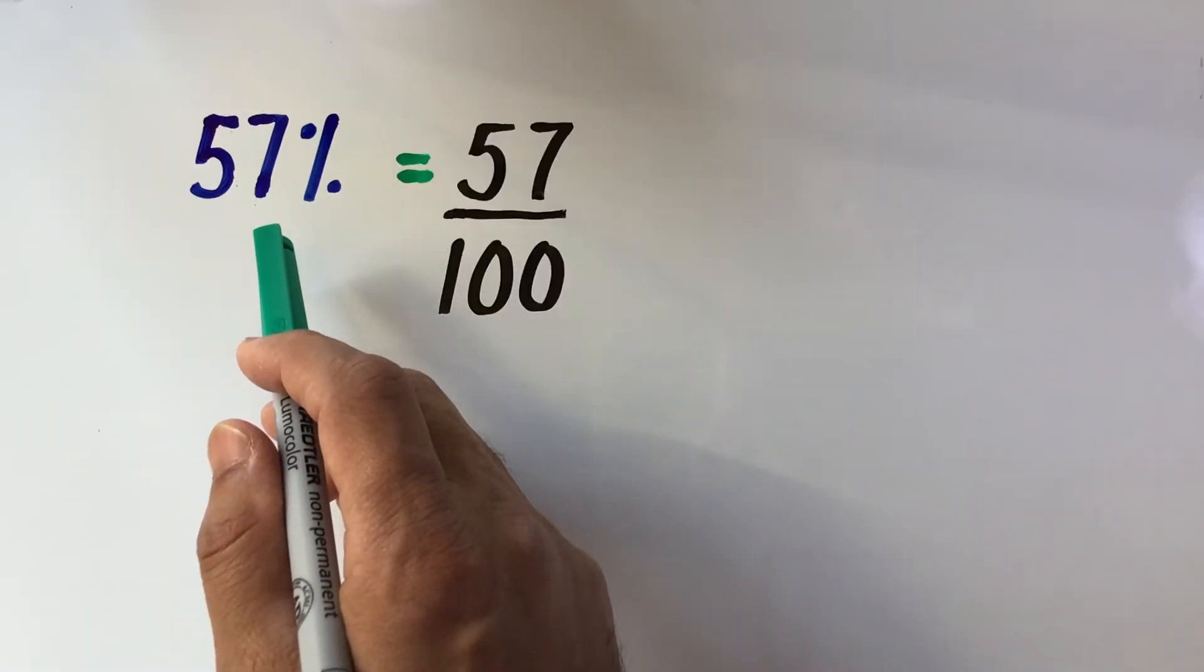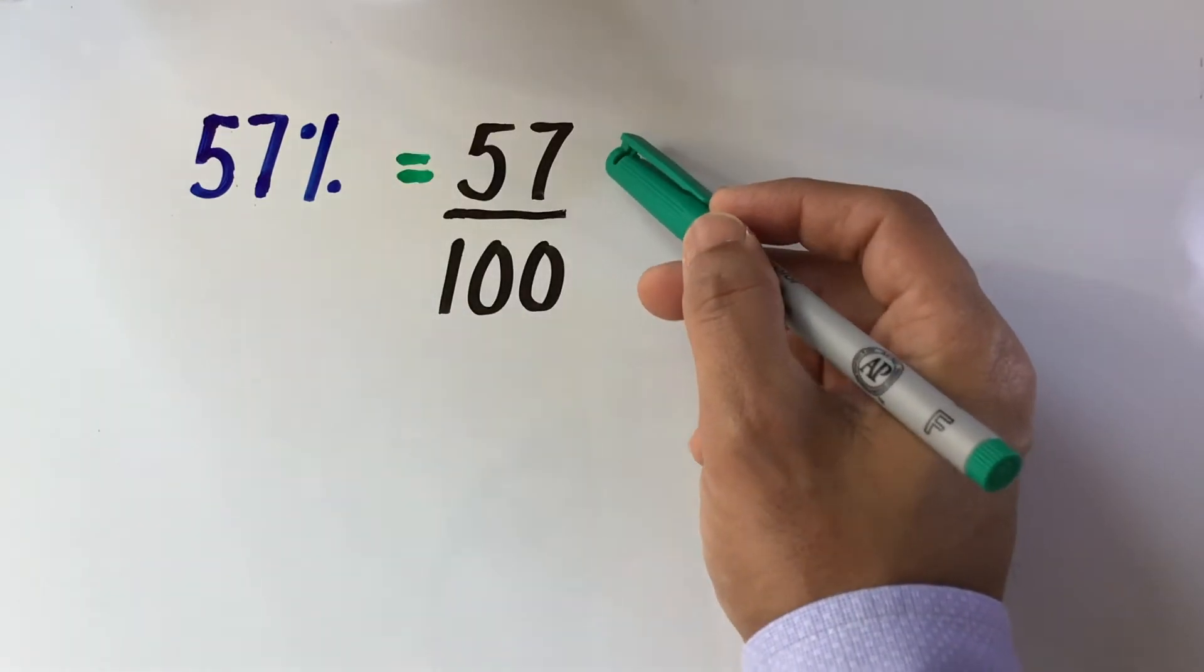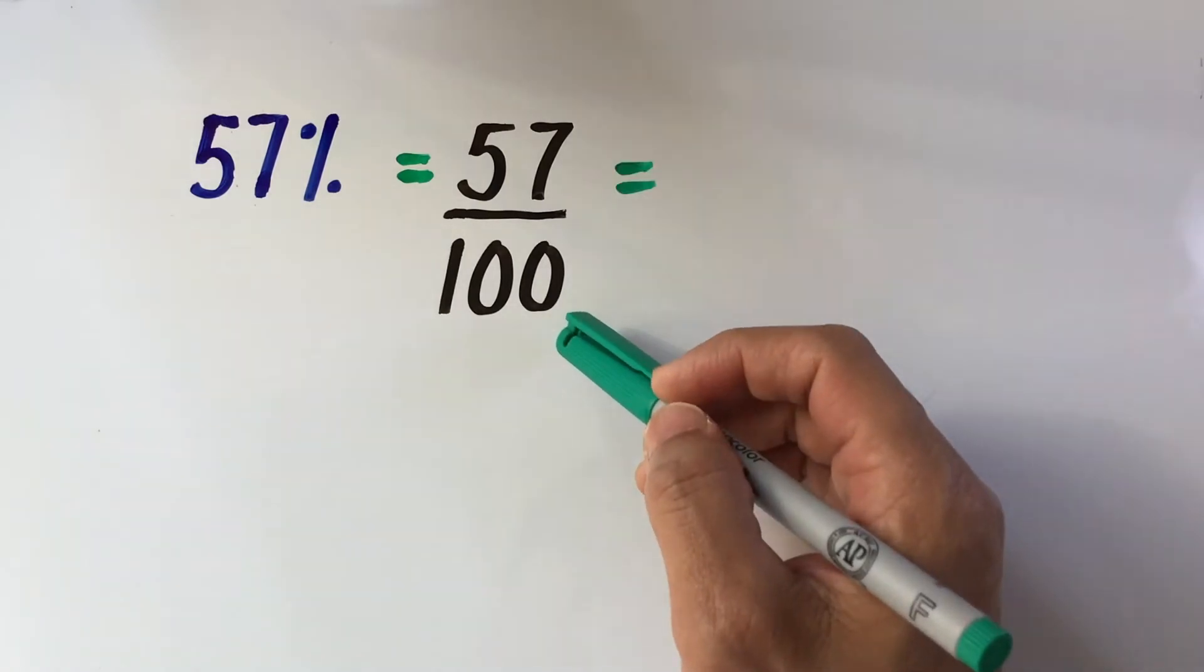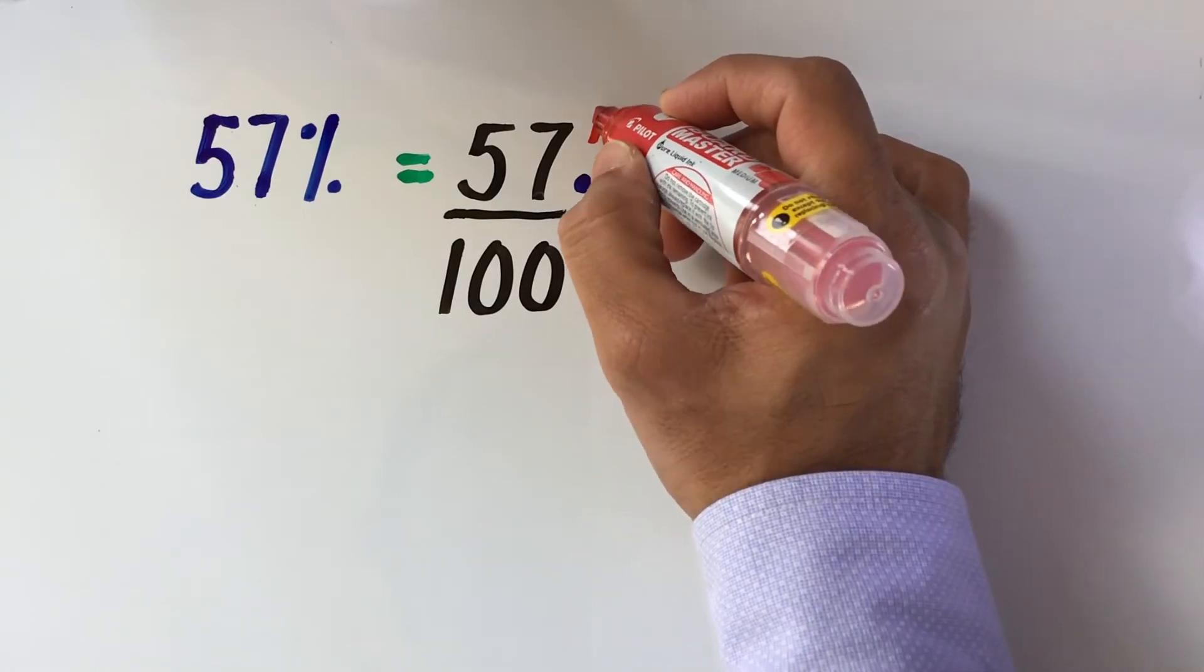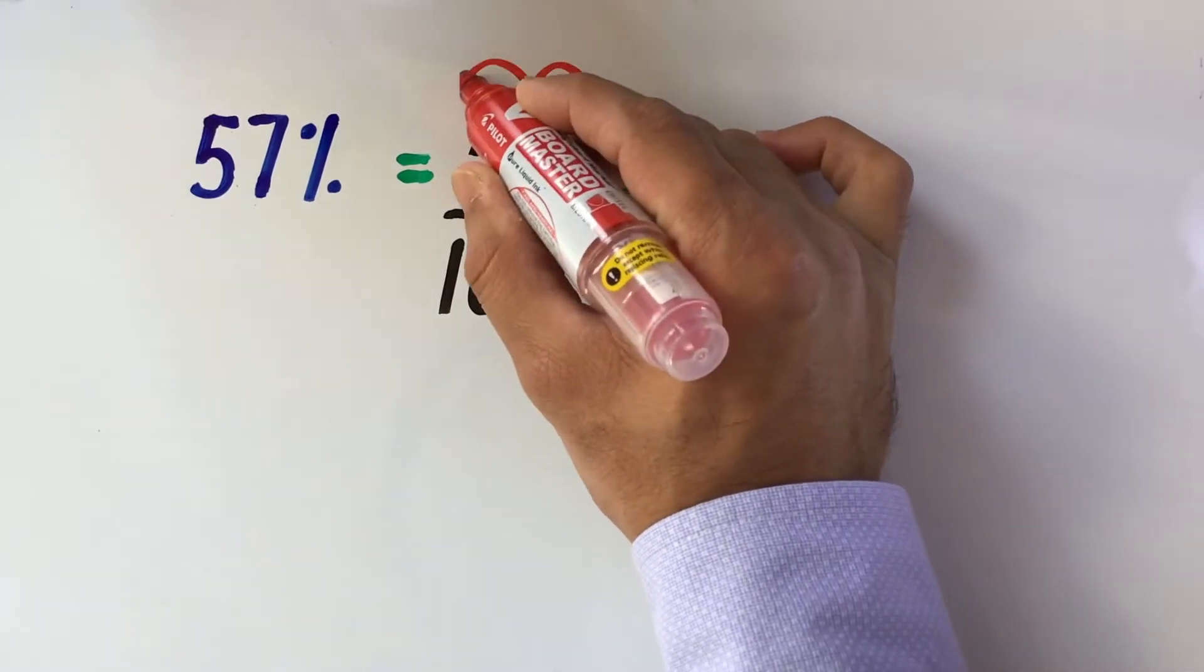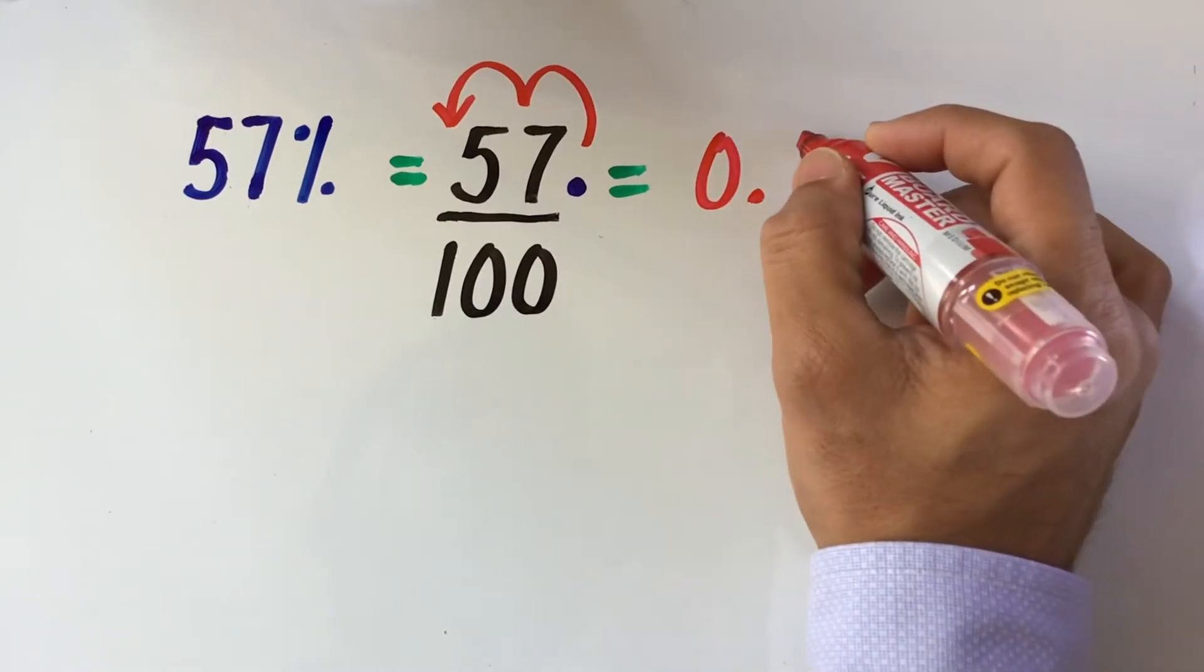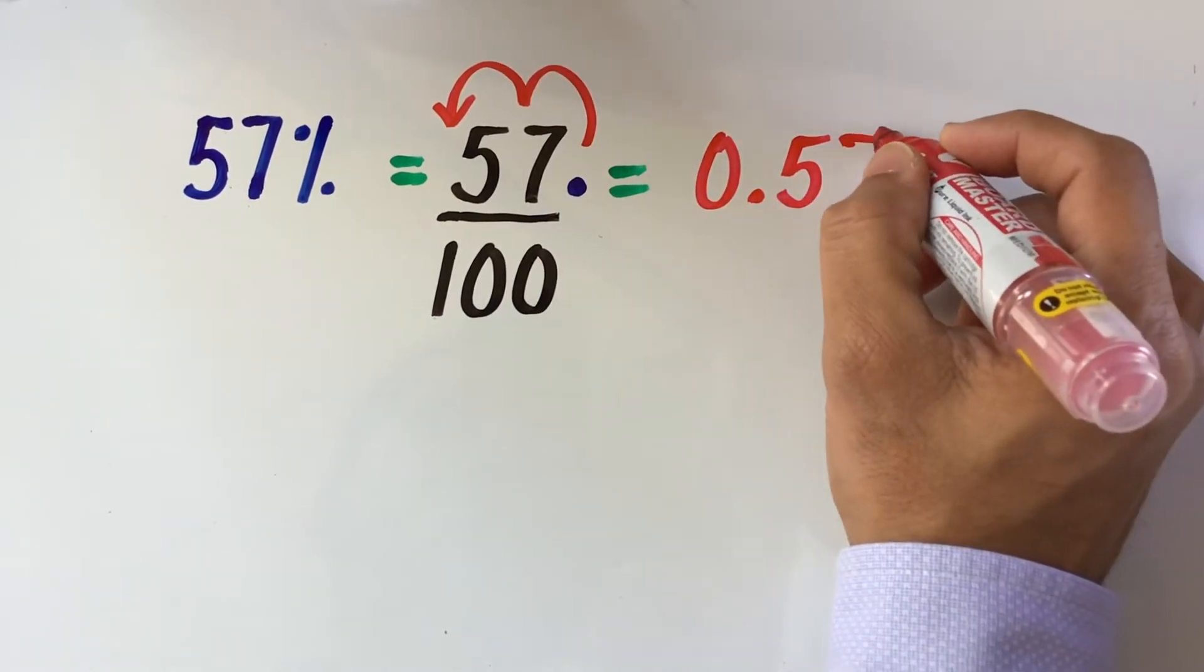To convert 57% into a decimal, we first write it as a fraction over 100. We know that when we divide a number by 100, the decimal point moves two places to the left. The decimal point which is after 7 will move two places to the left which gives us the decimal form of 57% as 0.57.